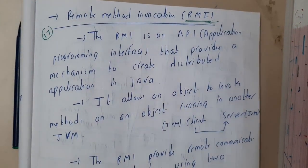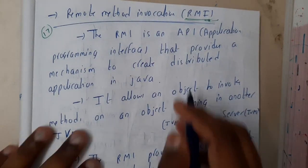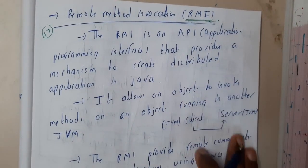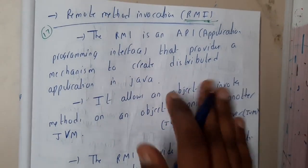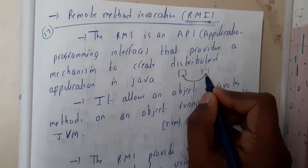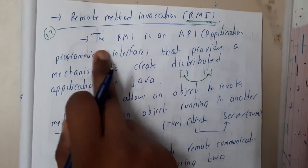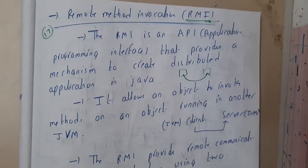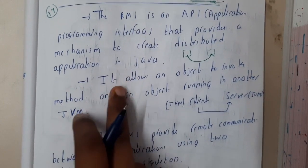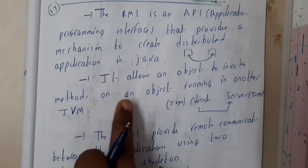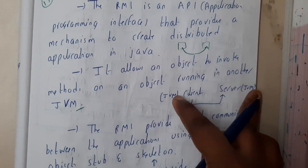In this lecture, let us go through the concept of Remote Method Invocation, or RMI. RMI is a functionality or API in Java. Using Java Virtual Machines, you can communicate from one system to another and call functions or methods from other systems. The RMI is an Application Program Interface that provides a mechanism to create a distributed application in Java. It allows an object to invoke methods on an object running in another JVM, so a client can run something on a server with the help of JVMs.